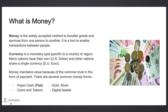Money is the widely accepted method to transfer goods and services from one person to another. Money is a tool that enables people to conduct transactions. A currency is a monetary type that is specific to a country or region. Many nations have their own currency — an example is the US dollar, which is America's currency.